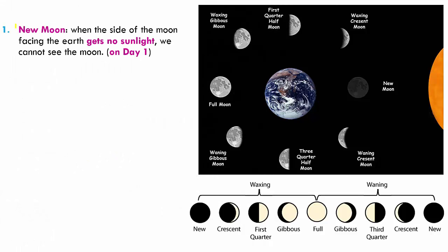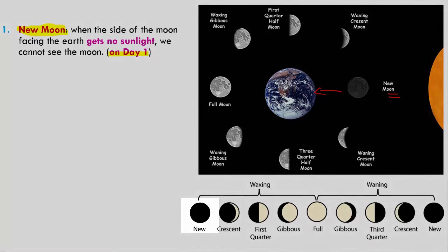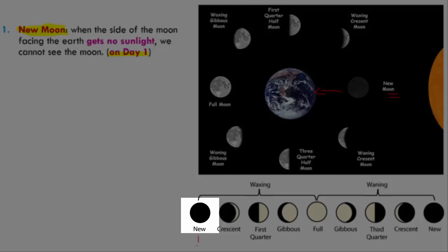These faces are five different faces. We have the new moon, which starts on day one, where you see no moon at all. On a new moon day, the side of the moon that faces us gets no sunlight at all, so that's why we call it a new moon. This is the new moon day when the part of the moon that faces the earth does not receive any sunlight, so we see a dark moon. This is on day one.